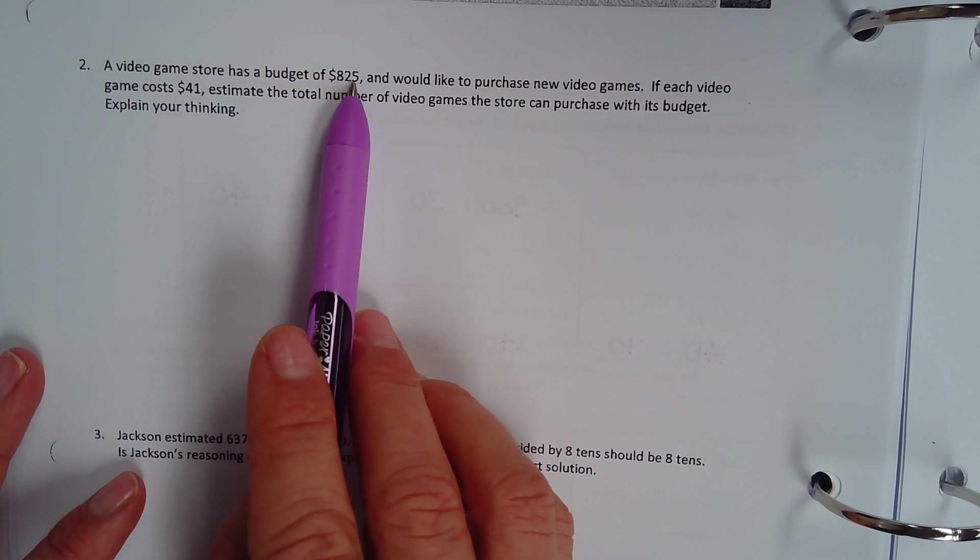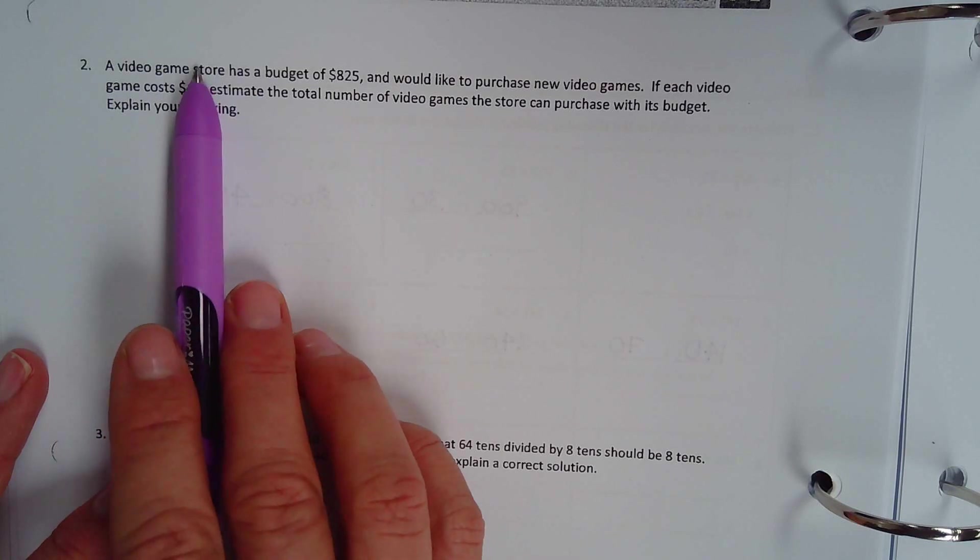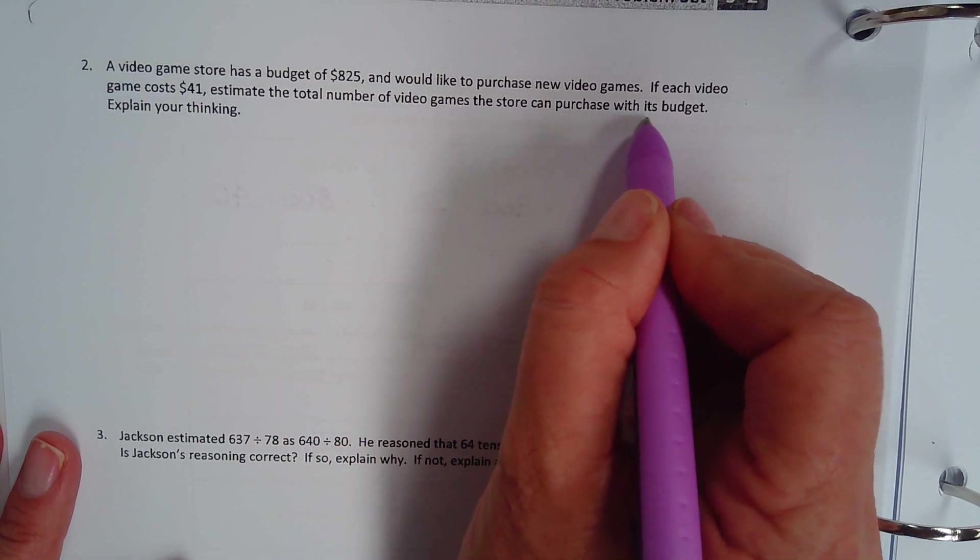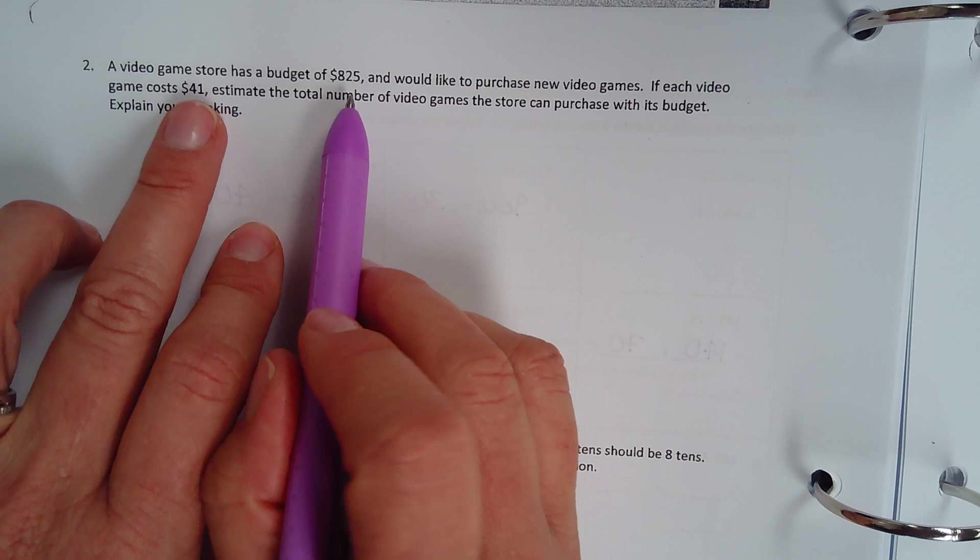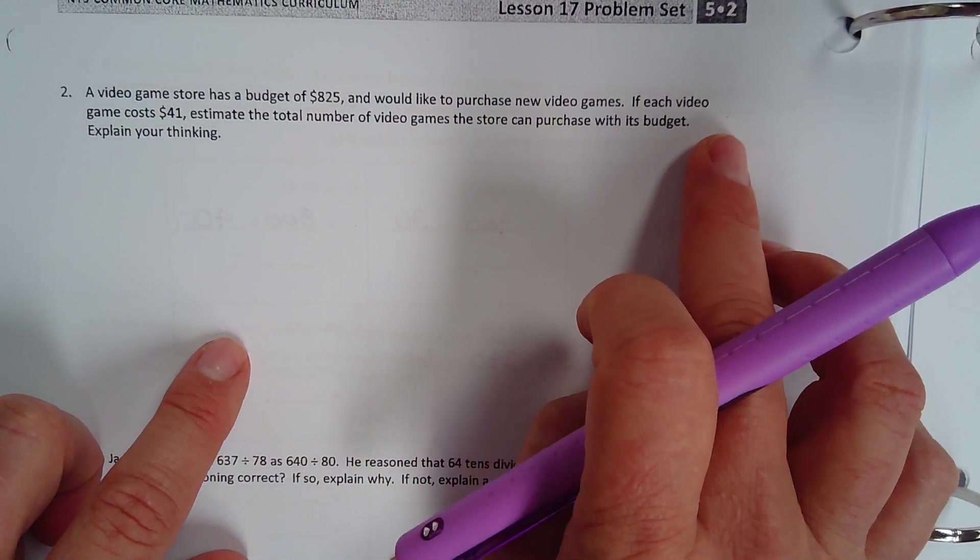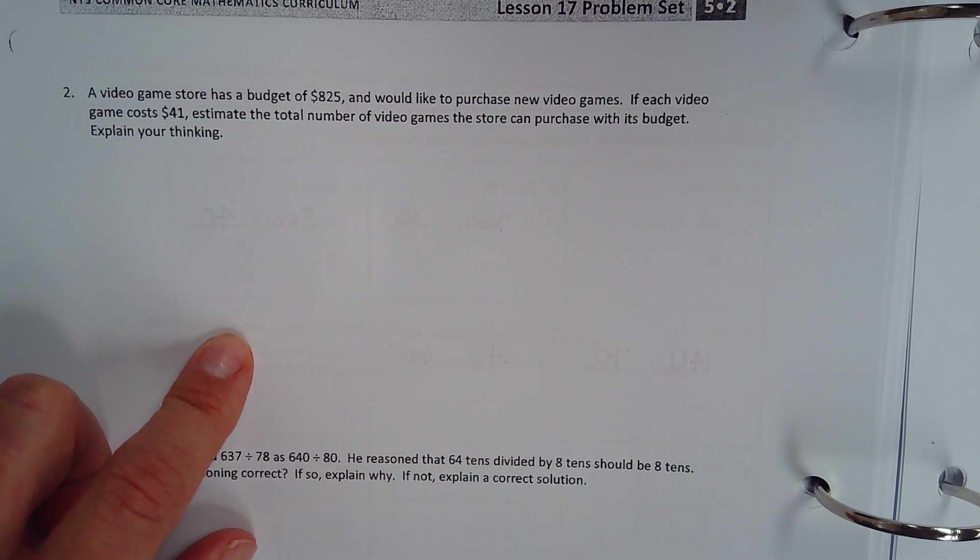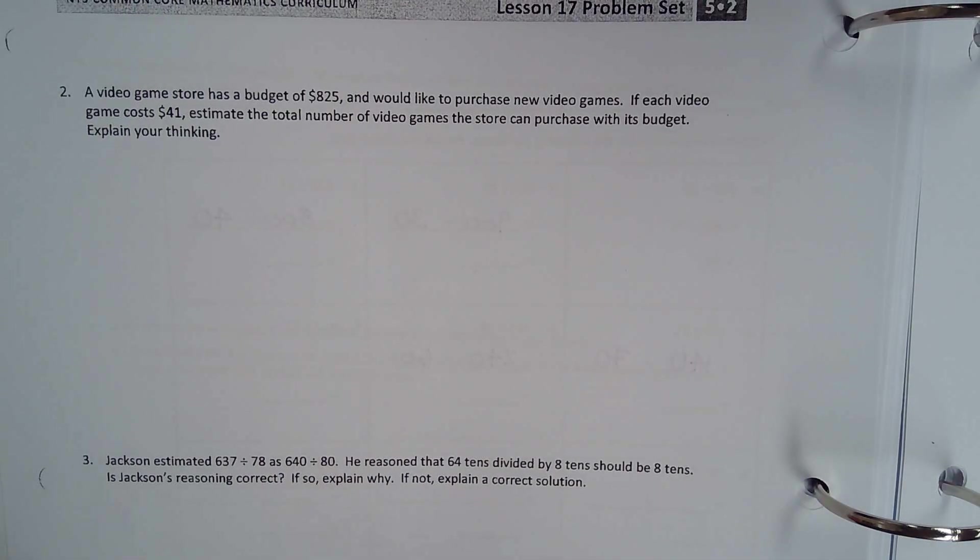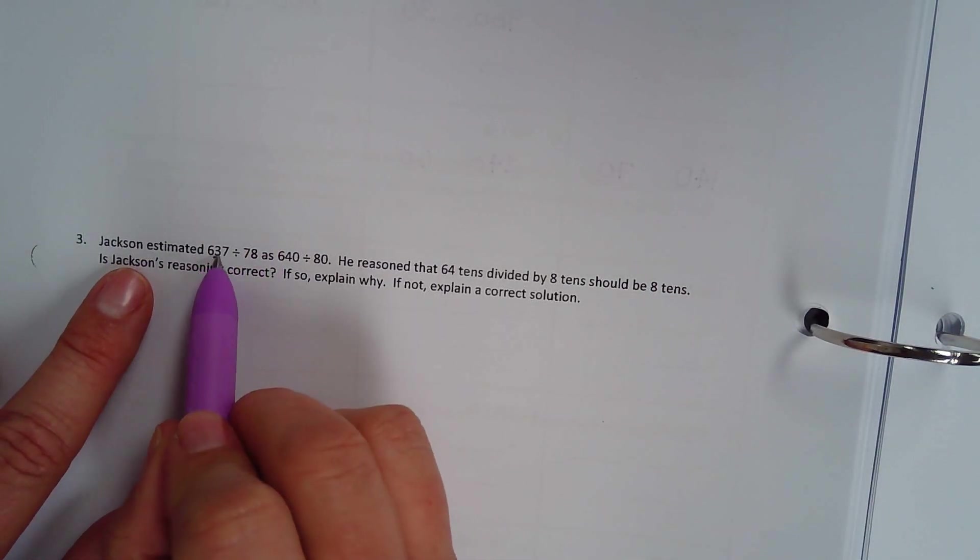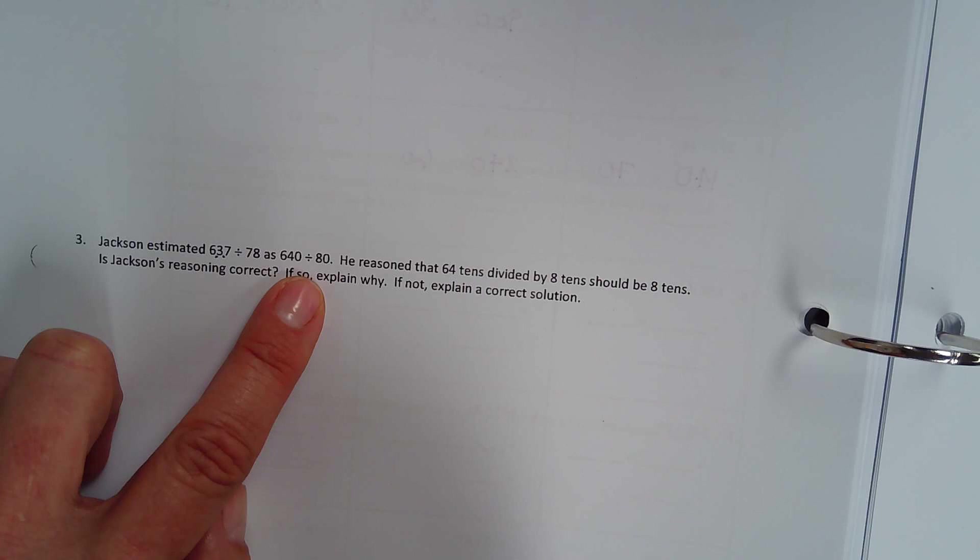a video game store has a budget of $825 and would like to purchase new video games. If each video game costs $41, estimate the total number of video games the store can purchase with its budget. Explain your thinking. So I want you to estimate, just like you were doing here, solve and tell me how, what is the process that you did? What were you thinking? Were you relating the numbers to multiplication facts? That is what you're explaining. Now, Jackson estimated that 637 divided by 78 as 640 divided by 80.